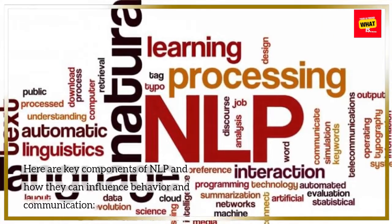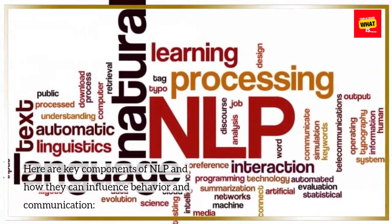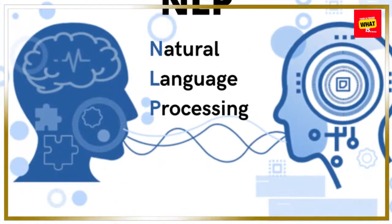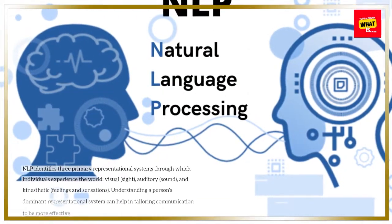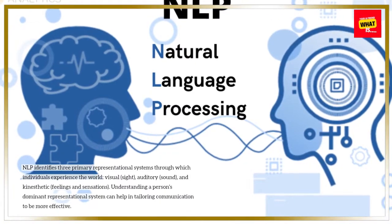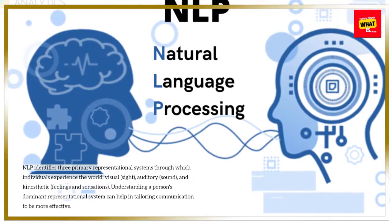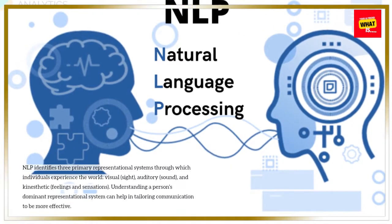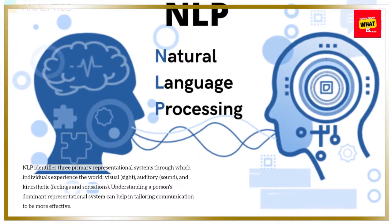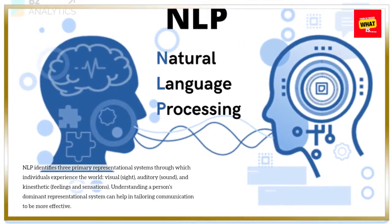Here are key components of NLP and how they can influence behavior and communication. Representational Systems: NLP identifies three primary representational systems through which individuals experience the world — visual (sight), auditory (sound), and kinesthetic (feelings and sensations). Understanding a person's dominant representational system can help in tailoring communication to be more effective.